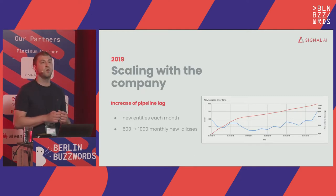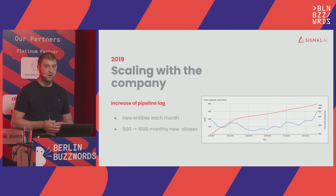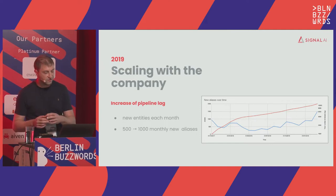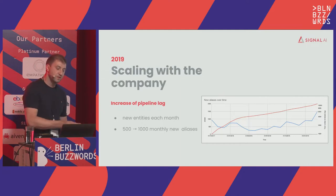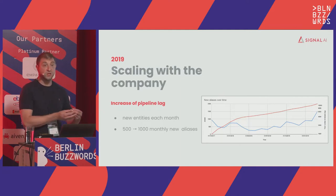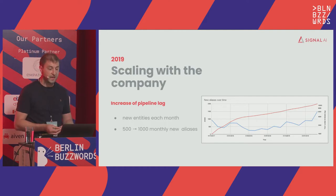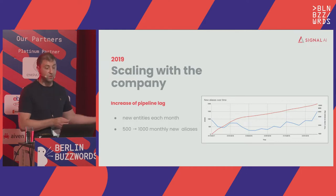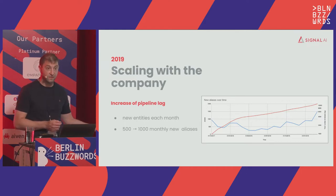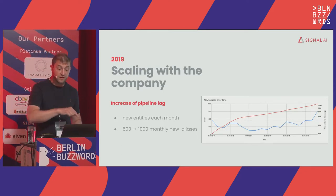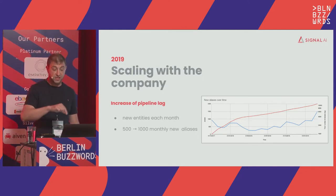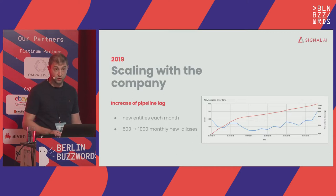Our entity rule service was one of the services most affected. The reason was that as we were growing, more entities were being introduced, more aliases were being added, and for example we were moving from about 500 aliases per month to about 1,000. As you can see from the graph, there is quite a steep curve, and it was not going to stop.